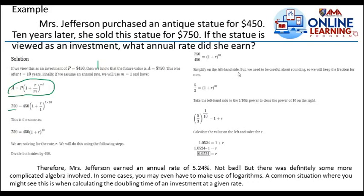So we have $750 divided by $450 equals 1 plus R raised to 10. Simplify on the left hand side, but we need to be careful about rounding. So we will keep the fraction for now. If we reduce to lowest terms, we have 5 over 3 equals 1 plus R raised to 10. Take the left hand side to the 1 over 10th power to clear the power of 10 on the right. So raise both sides to 1 over 10.